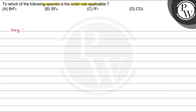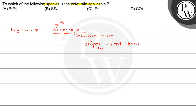The concept here is the octet rule. Octet rule — 'octo' refers to 8. It is a chemical rule which states that atoms tend to bond in such a way that each atom has 8 electrons in its valence shell — that is, the outermost shell. By achieving this, atoms attain noble gas electronic configuration and gain stability.